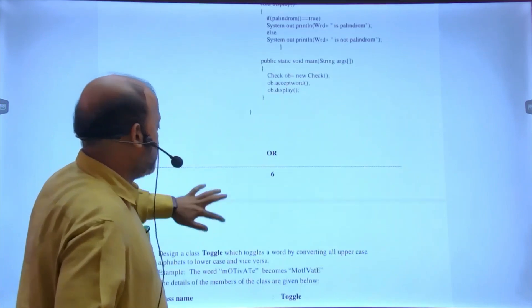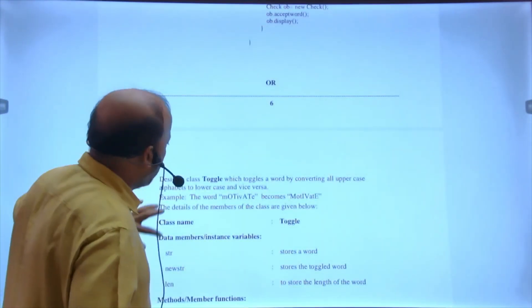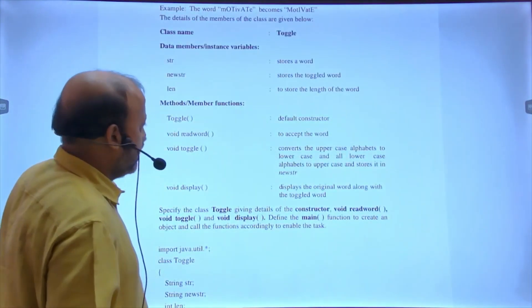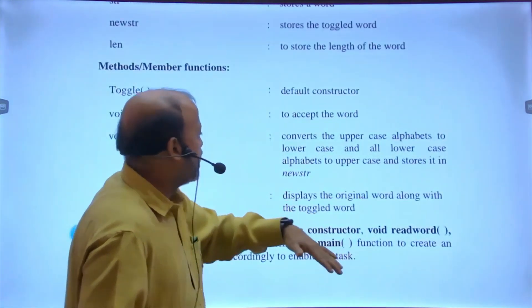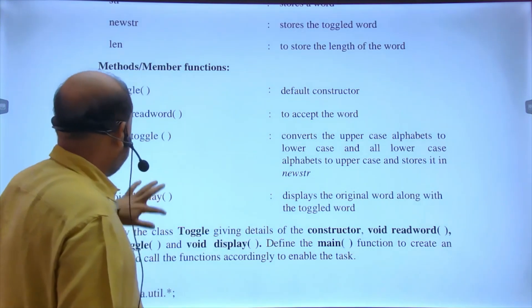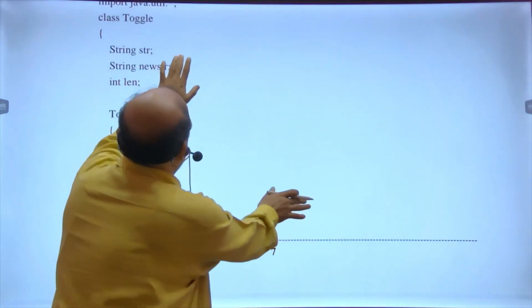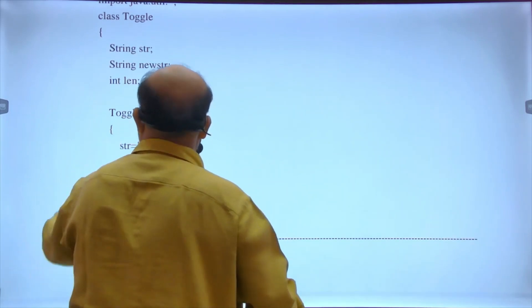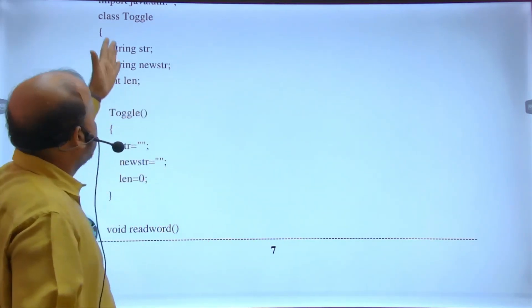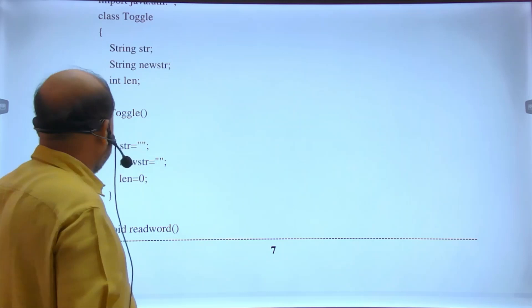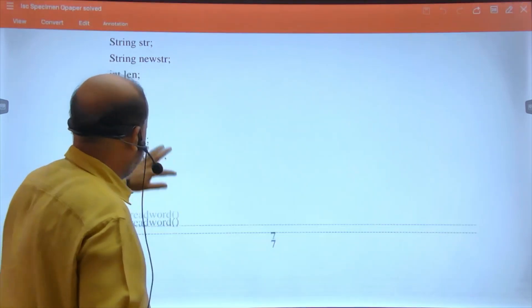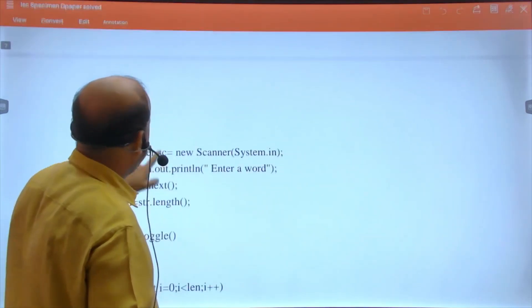In void display, I've checked if palindrome equals true. This 'true' is not mandatory, you can write if(palindrome) also, simply. Main is told, you must do it, otherwise you're going to lose marks. This is an easy program given because if you remember in ICSE, your string syllabus was not there.